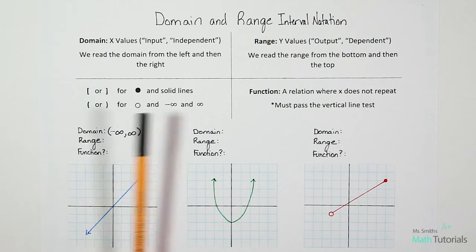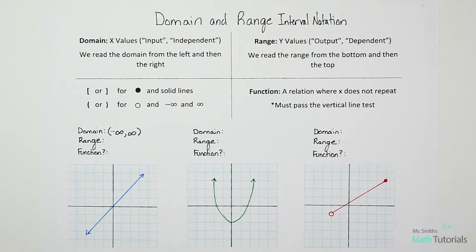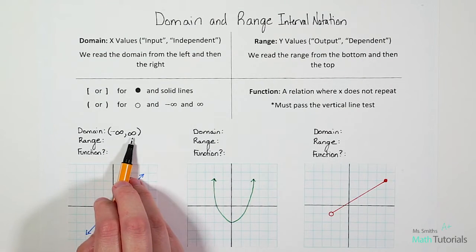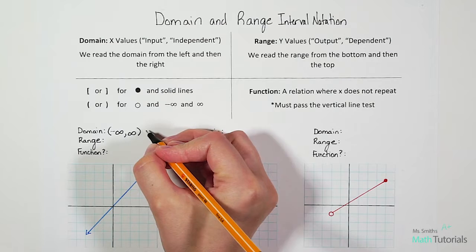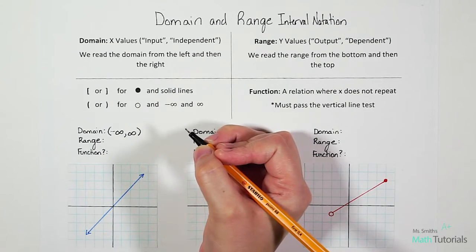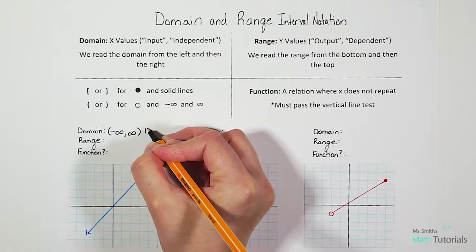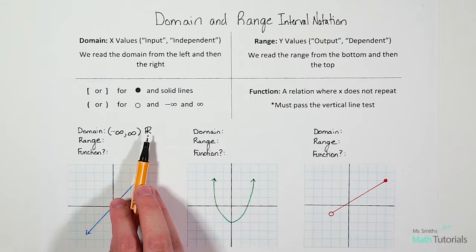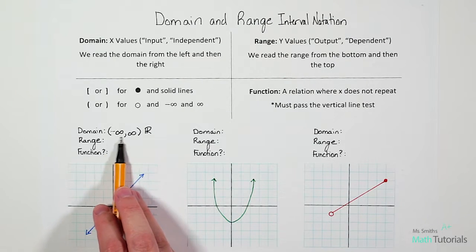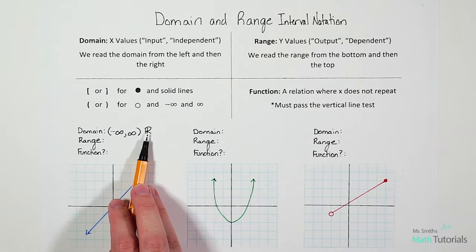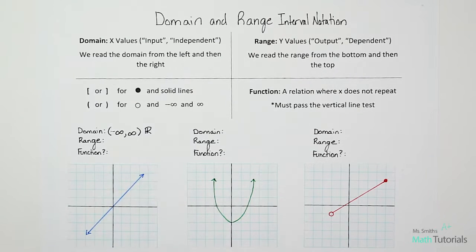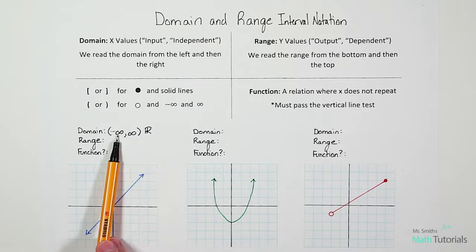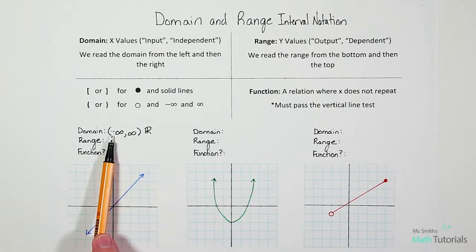It reads from negative infinity to positive infinity. Another way to say this is using the double-lined R symbol, which stands for all real numbers. That's another way to say the same thing — a little less writing. You could also write out 'all real numbers' if you wanted to. Either one of these answers is acceptable if it is negative infinity to positive infinity — it has to be both.